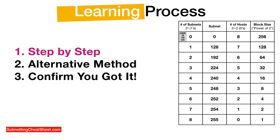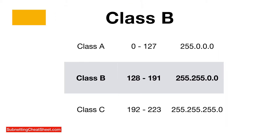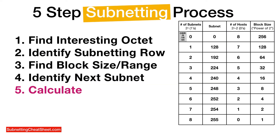Here's the learning process. First, I'm going to show you step-by-step, then an alternative method, and then confirm you got it with a third example. Here's some notes for Class B: the range is between 128 and 191 with the default subnet mask of 255.255.0.0. I use a five-step subnetting process with the cheat sheet four-column method. The five steps are: find the interesting octet, identify the subnetting row, find the block size and range, identify the next subnet, and then calculate.